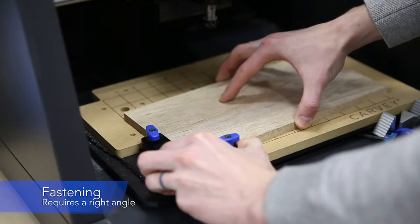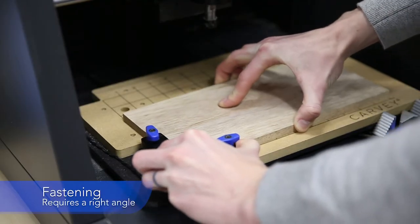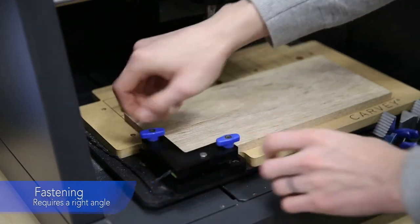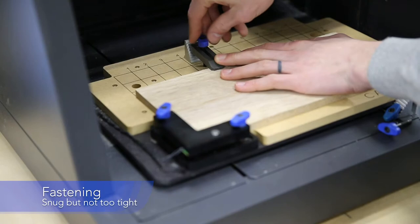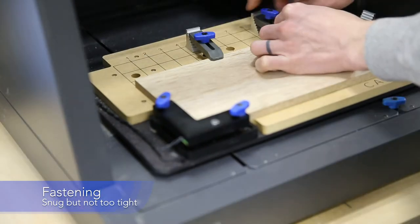The first step in securing material is to secure it under the smart clamp. This is how Carvi will know how tall your material is. Next I'll use the hold-downs around the perimeter of the part to secure my material to the table.